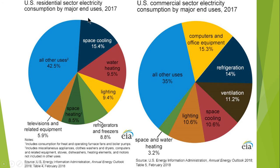Continuing with residential consumption: 9.4 percent for tube lights and other lighting equipment, 9.5 percent for water heating, and 15.4 percent for space cooling such as air conditioners. For the commercial sector, 35 percent is other undocumented uses, 15.3 percent for computers, 14 percent for refrigeration, 11.2 percent for ventilation, 10.6 percent for lighting, 10.6 percent for space cooling, and about 3.2 percent for space and water heating.